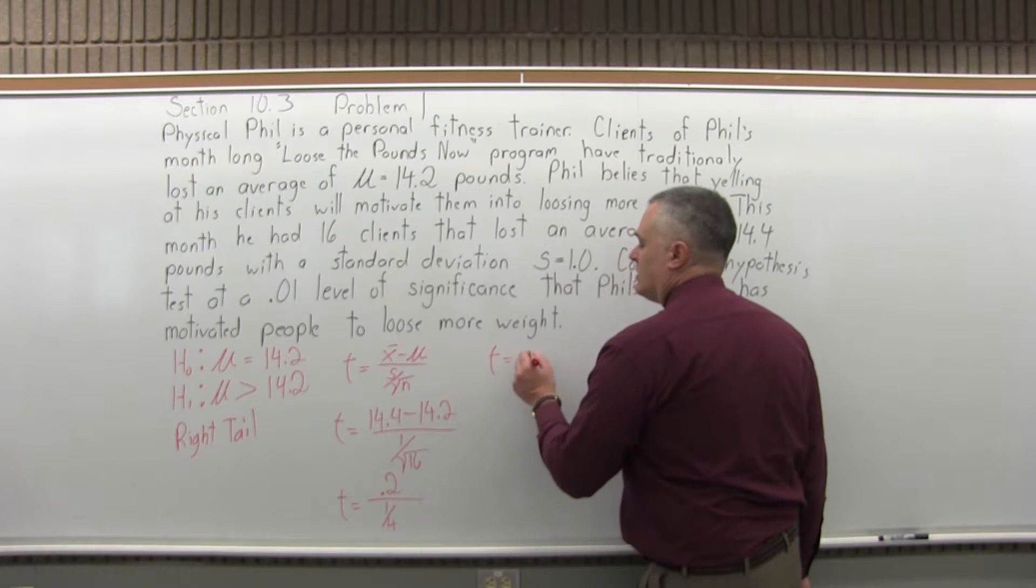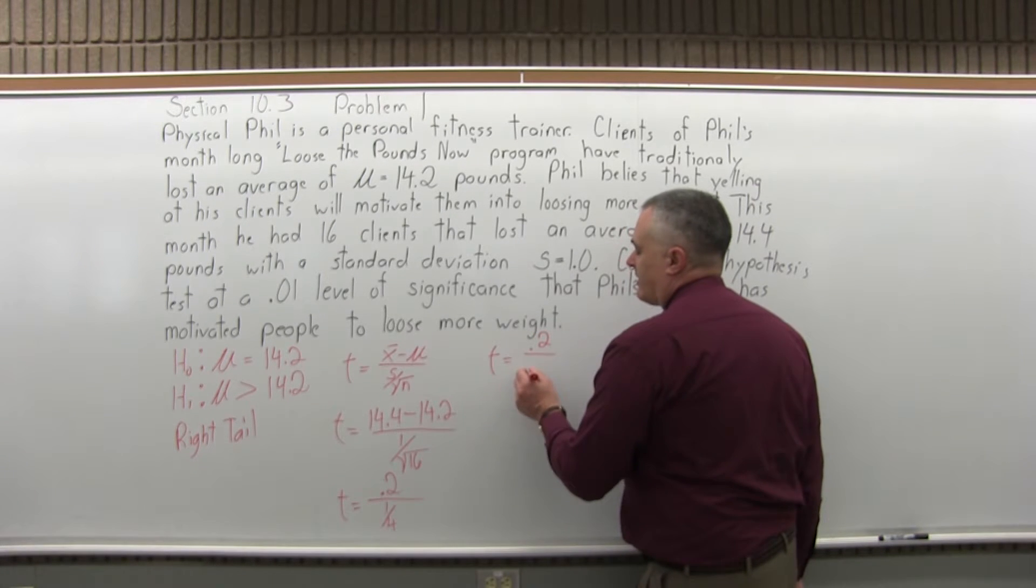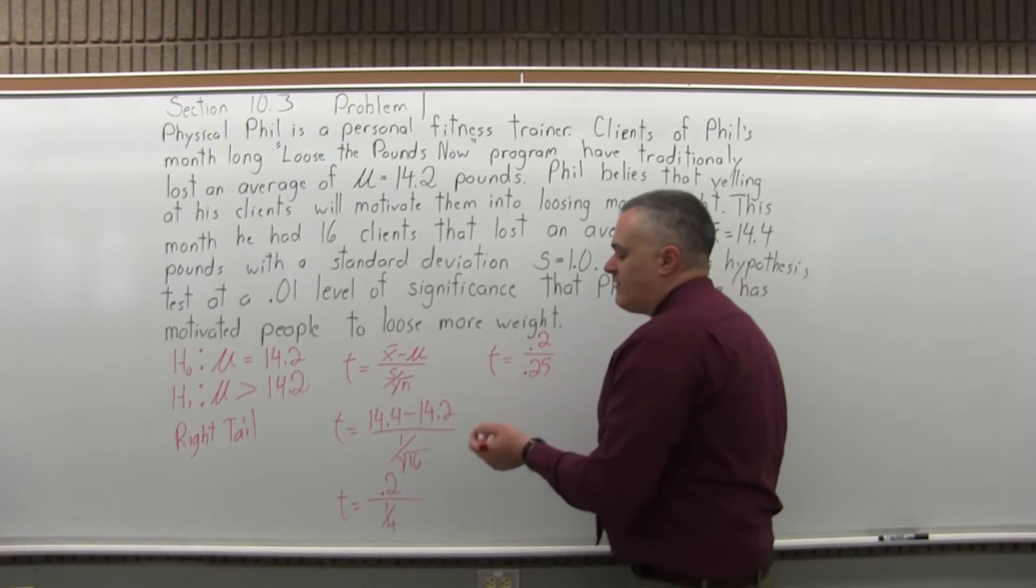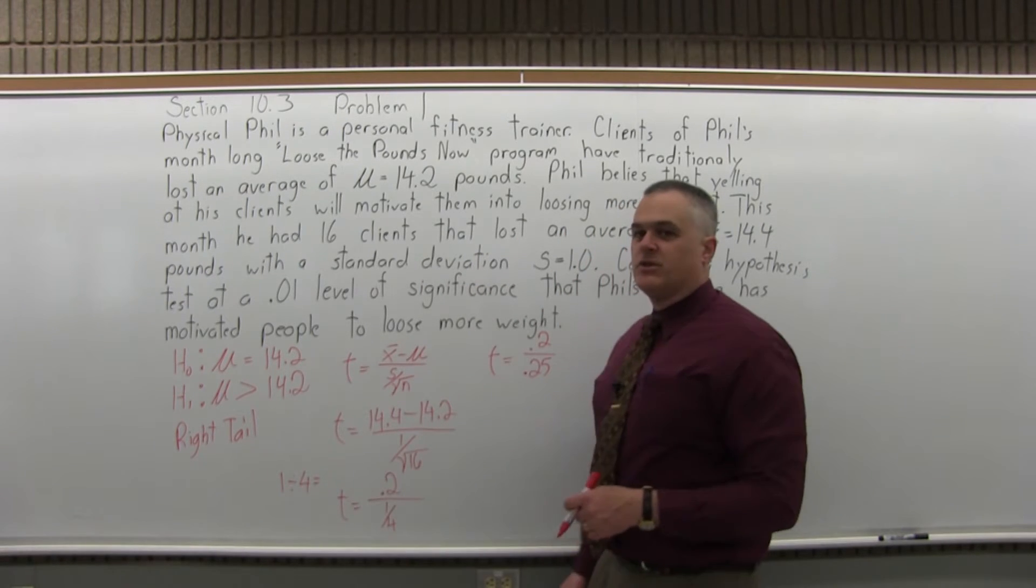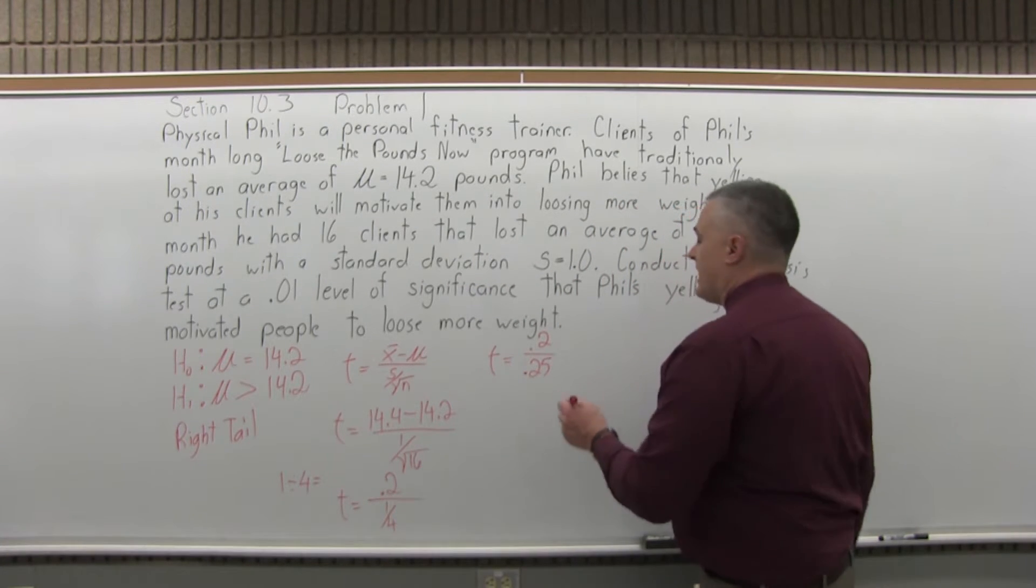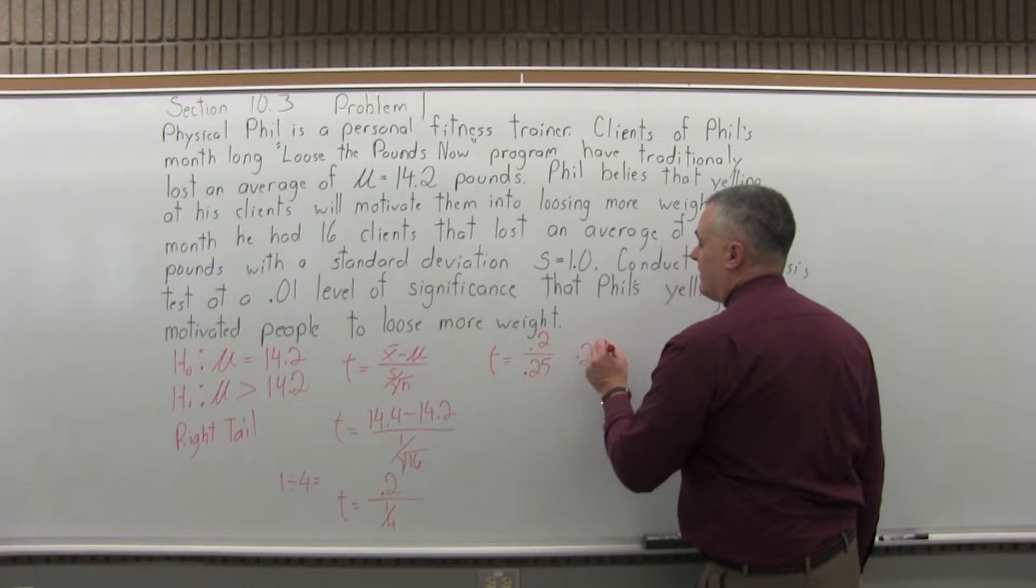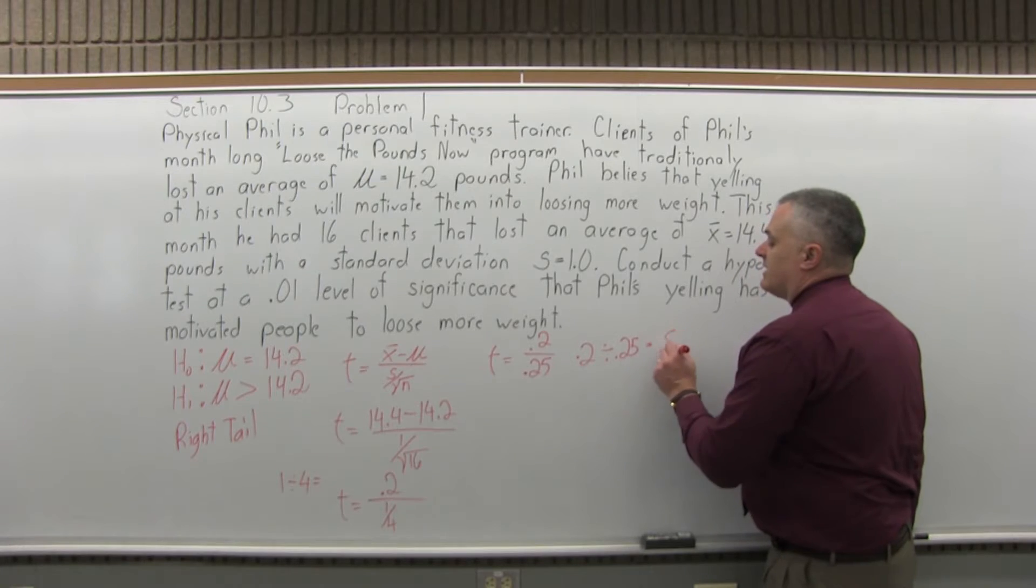I'll have T equals, I still have 0.2 on top, and 1 fourth. I can do without a calculator. I know that's 0.25. If you don't remember that, you can just use your calculator. 1 divided by 4 equals, it'll tell you 0.25. Now you can finish off the computation for T. The numerator, 0.2, divided by the denominator, 0.25. And you'll see that that is 0.8.